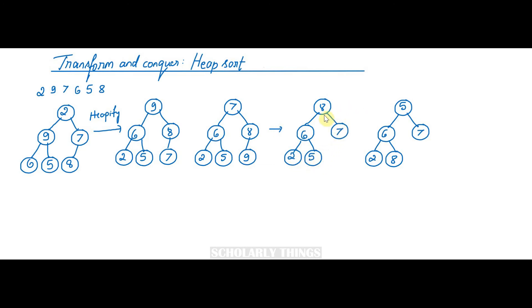Again do the maximum key deletion. Consider the root node and the last element. 8 and 5 are exchanged, and then delete 8 and then reconstruct the heap. So now the heap looks like this.